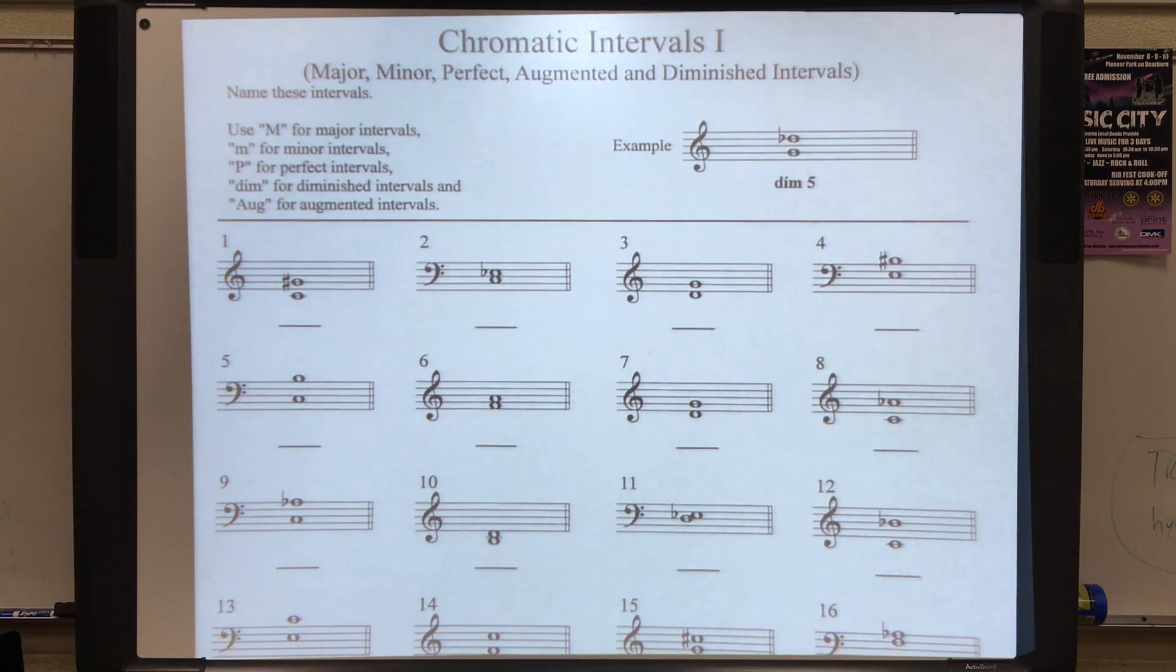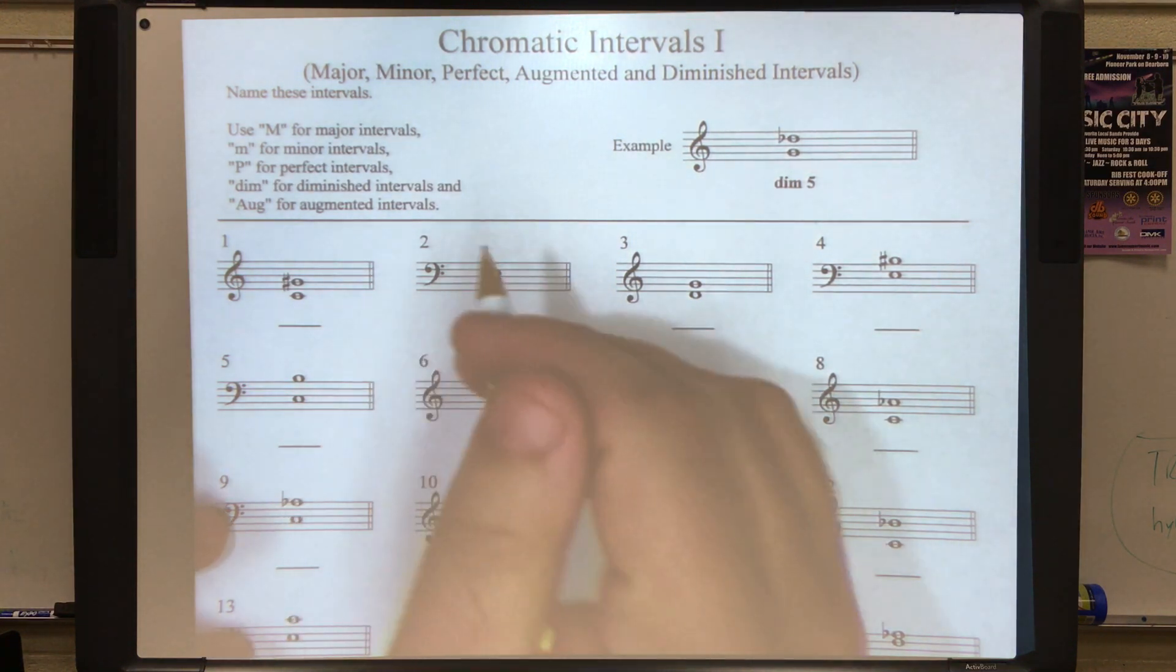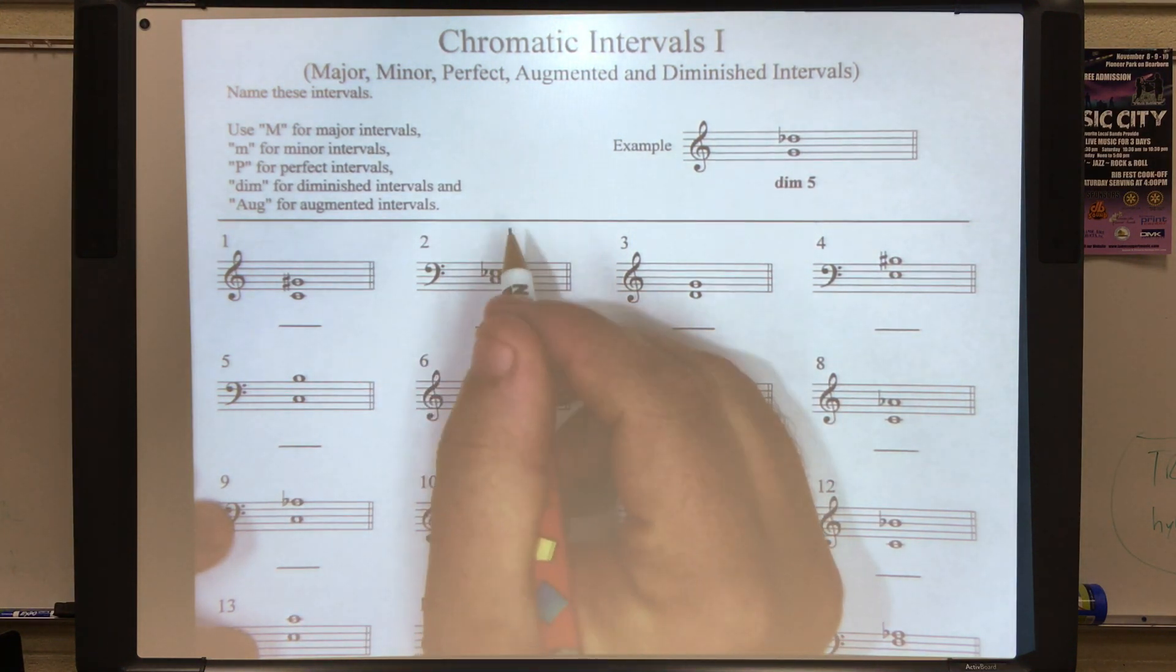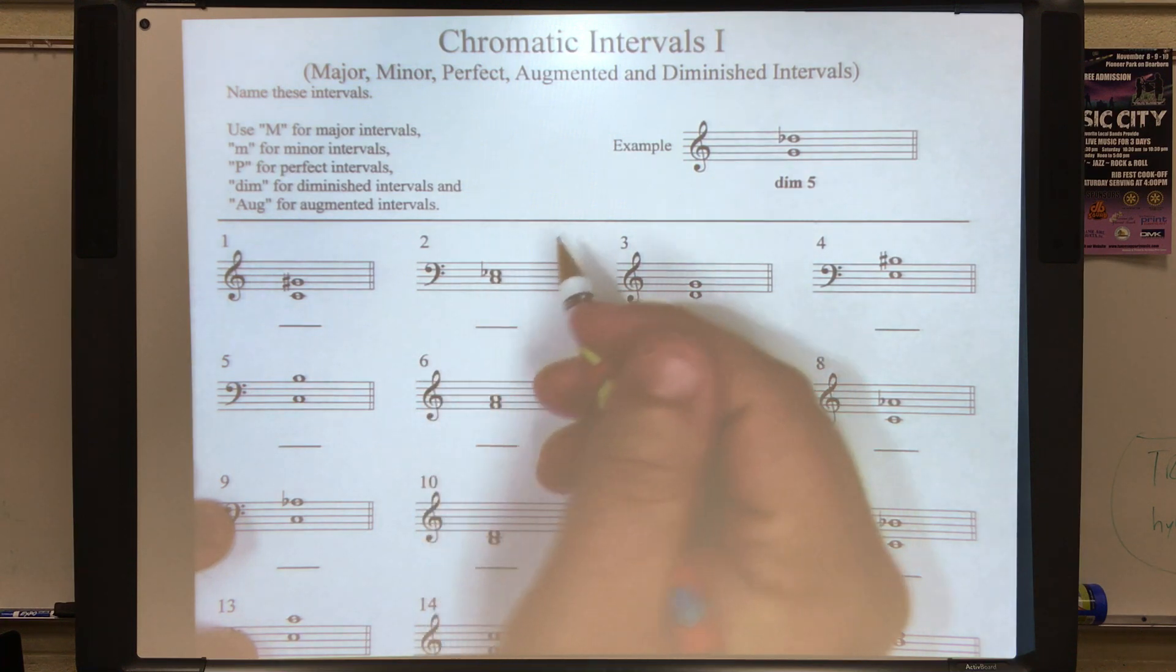Okay, now we're going to do chromatic intervals. These are major, minor, perfect, augmented, and diminished intervals. So these are all the intervals we've covered up to this point.